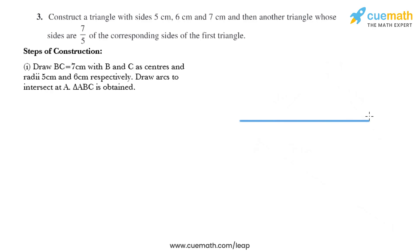So this is B and this is C and it measures 7 cm. Now I'll put the compass at B and measure the opening as 5 cm and draw an arc like this.